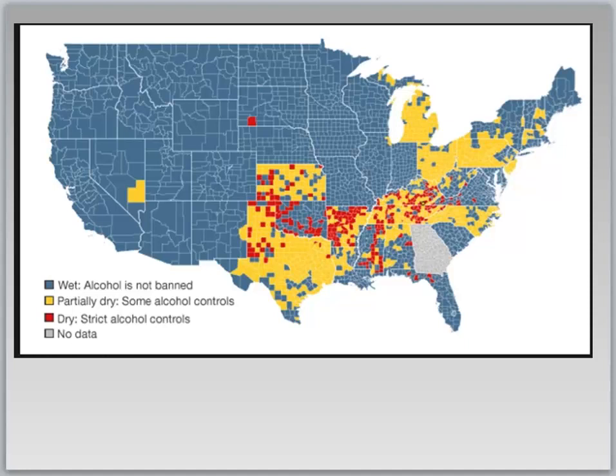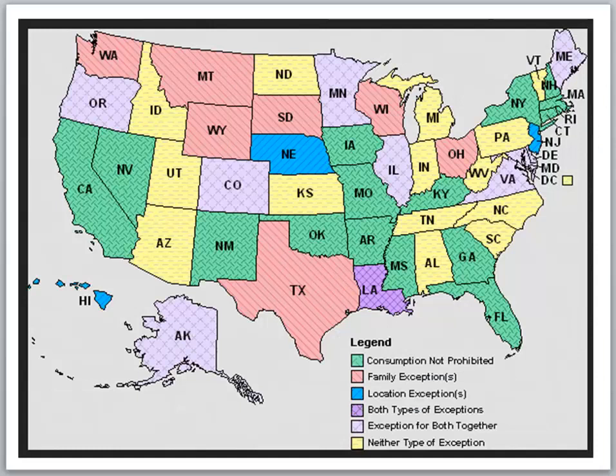The map of the day shows areas where alcohol is not banned, counties where it's partially dry, areas with strict alcohol controls, and areas with no data. I found this map interesting because I had no idea how the controls worked in many of these states. Having lived in the Northeast for most of my life, I knew about New York, Pennsylvania, Vermont, New Hampshire, Maine, Rhode Island, and Connecticut, but they were all pretty much the same with the exception of Pennsylvania.